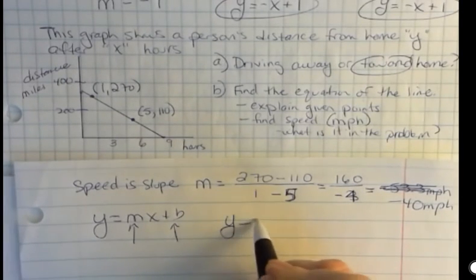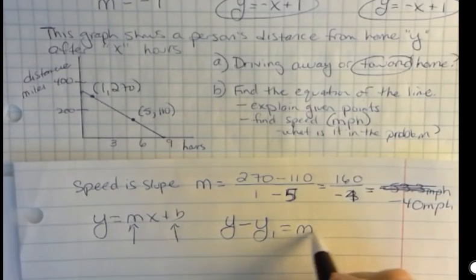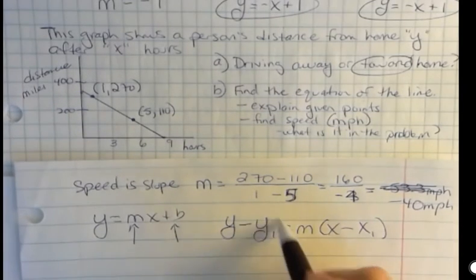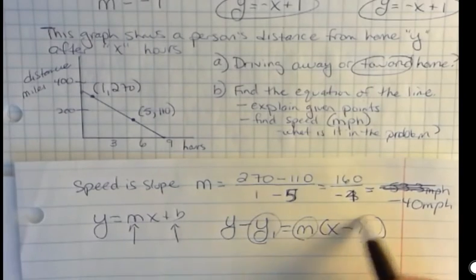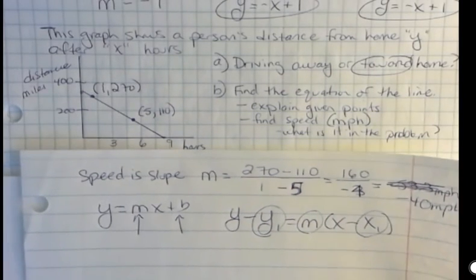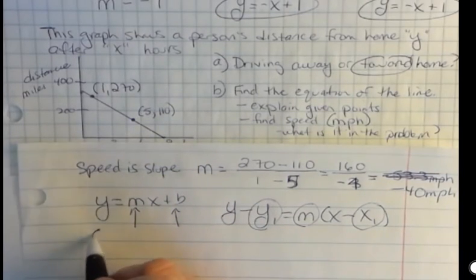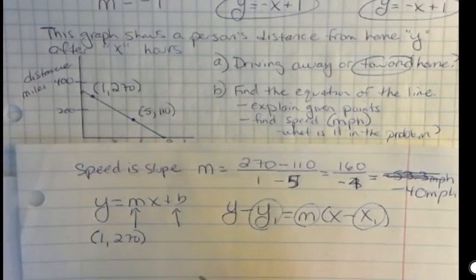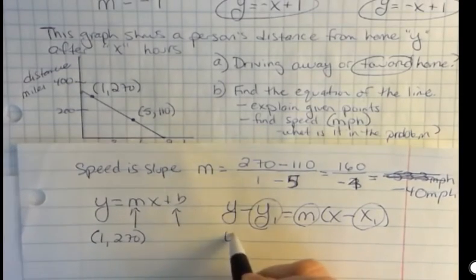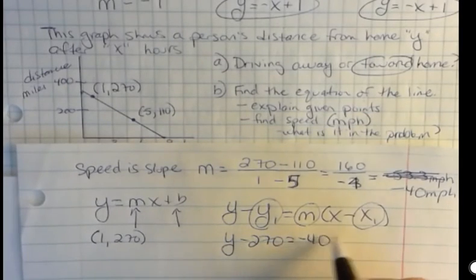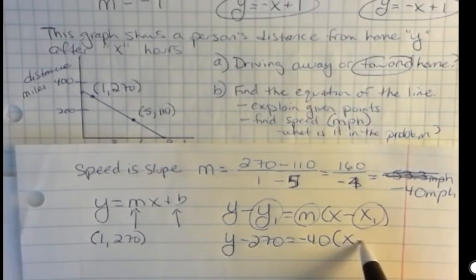So I'm going to take this formula, and I'm going to plug in the y sub one, the m, and the x sub one. Now, what's my x sub one and y sub one? Well, it's one of these points up here, whichever one I choose. I'm going to choose one and 270, but you could have chosen five and 110 and gotten the same answer. So I have y minus 270 is equal to negative 40 and x minus one.